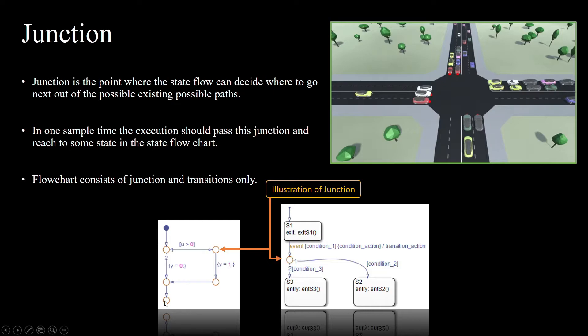In flowchart, we have only junctions and transitions. The flowchart consists of only junctions and transitions, and with the help of conditions it will try to come from one junction to another junction and trace the path. But in stateflow, we have states where the activity can stay, and then we can go into the next state based on junction conditions or transition conditions.